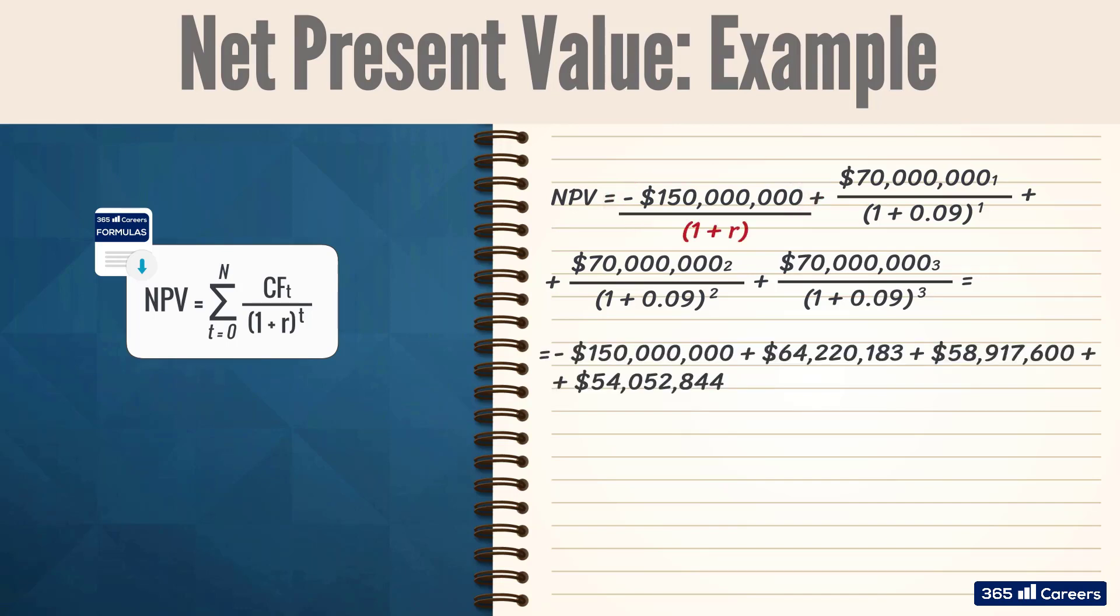You might notice that the initial investment is not discounted at the opportunity cost of capital because it happens at time zero, which is another way to say it occurs in the present moment. Then, we start with the first cash inflow of $70 million,